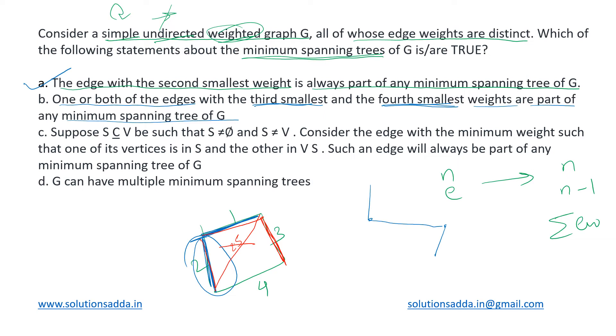If this third smallest adds a cycle, we will go for the fourth smallest. And it is also possible that both third smallest as well as the fourth smallest may be added to our MST. So this option is also true. Now coming to the third one.